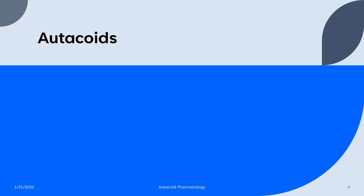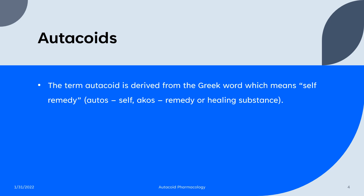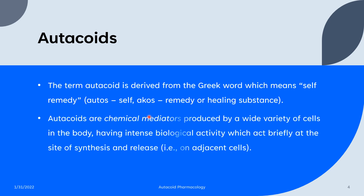How do we define autacoids? The term autacoid is derived from the Greek word meaning self-remedy. The root word 'auto' means self and 'akos' means remedy or healing substance. Autacoids are defined as chemical mediators produced by a wide variety of cells in the body, having intense biological activity which act briefly at the site of synthesis and release.